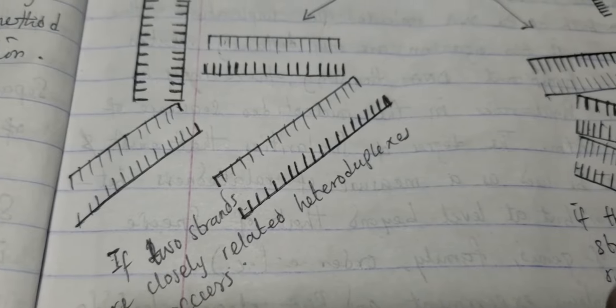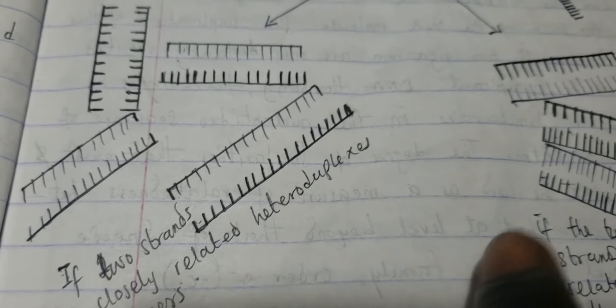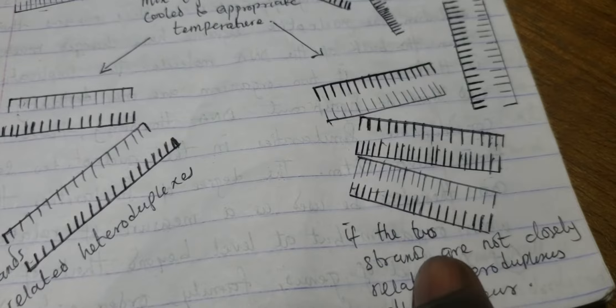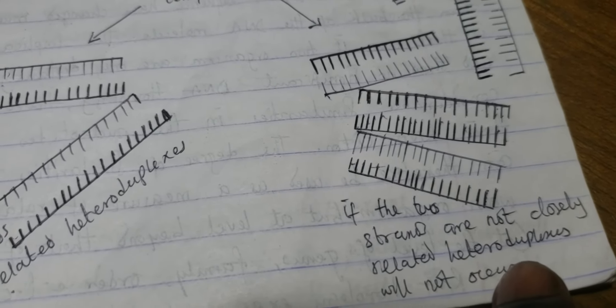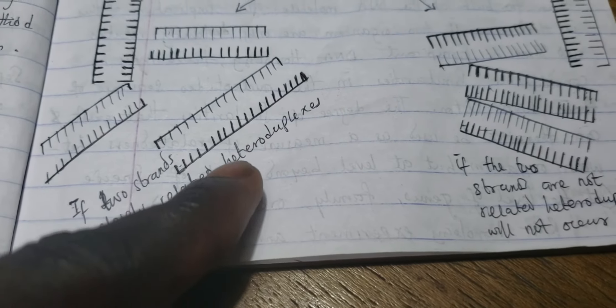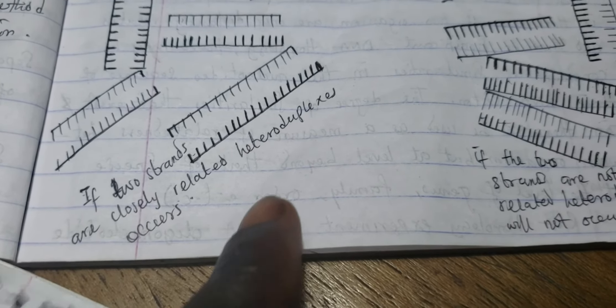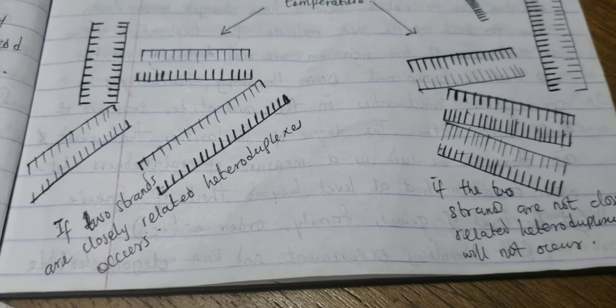If the two strands are not closely related, heteroduplexes will not occur. So when they come close together, it means they are related and heteroduplexes are formed. Thank you.